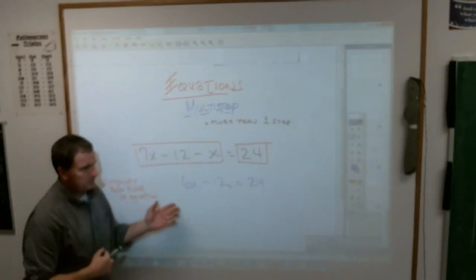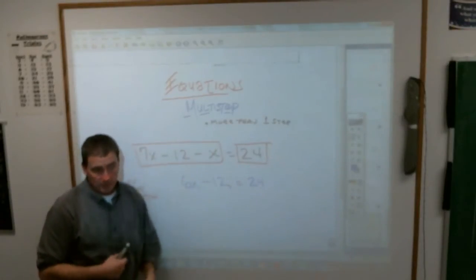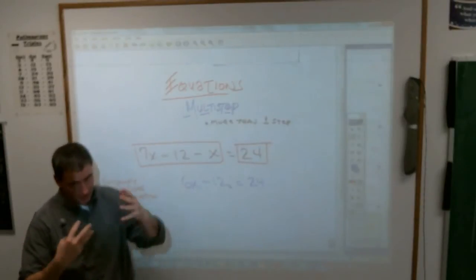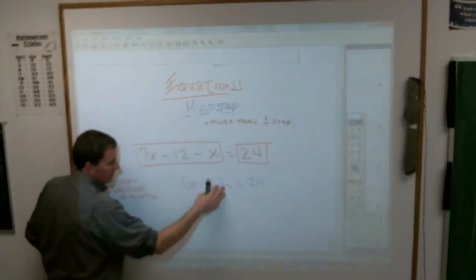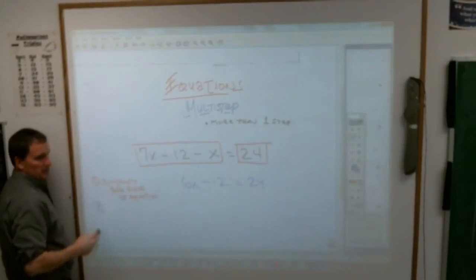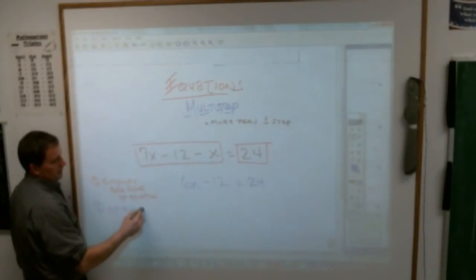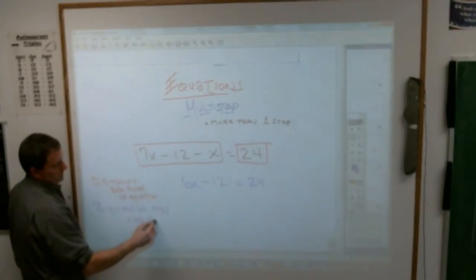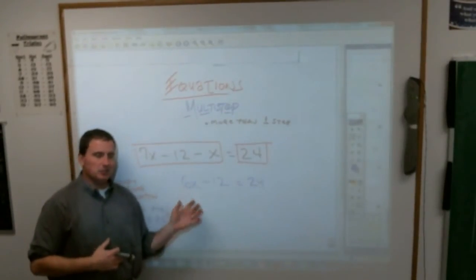And then once you get it to this equation, you need to solve it from there. Now, have we done these before? If you look at this, there are two different things you have to do. This is like a combo equation. You've got both subtraction and you've got multiplication. So it's a combination, subtraction, multiplication equation. When you are given the choice like this, you must, must, must always get rid of the addition and subtraction stuff first.